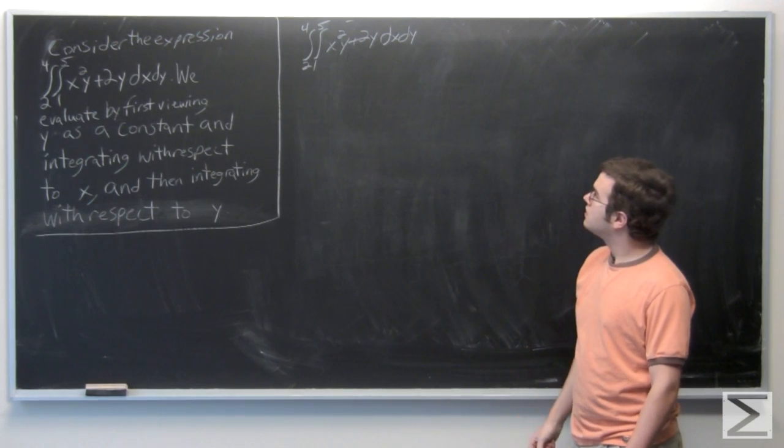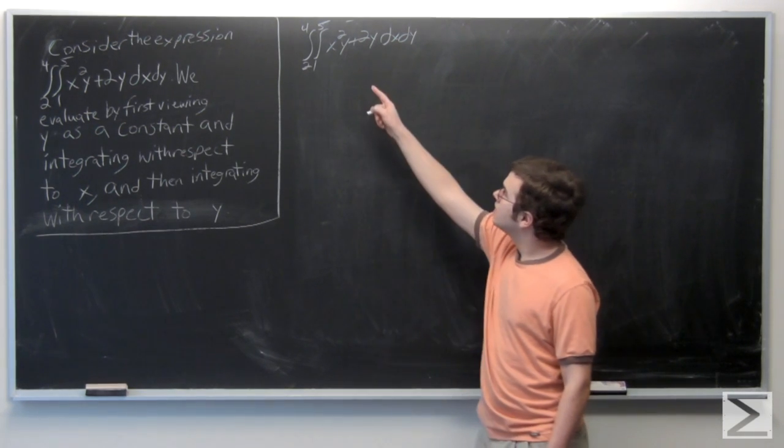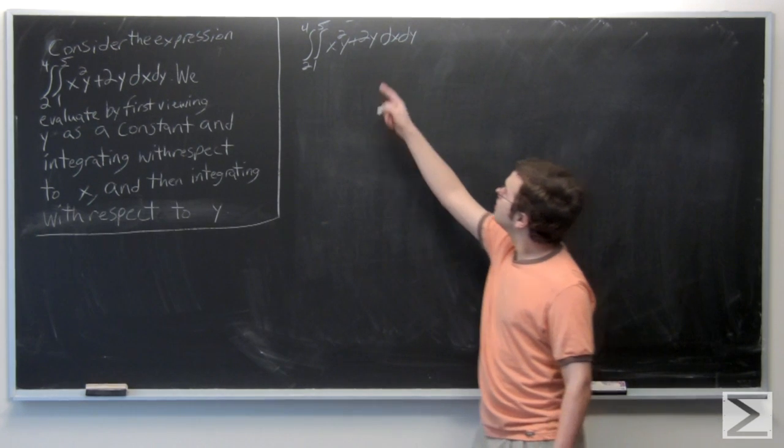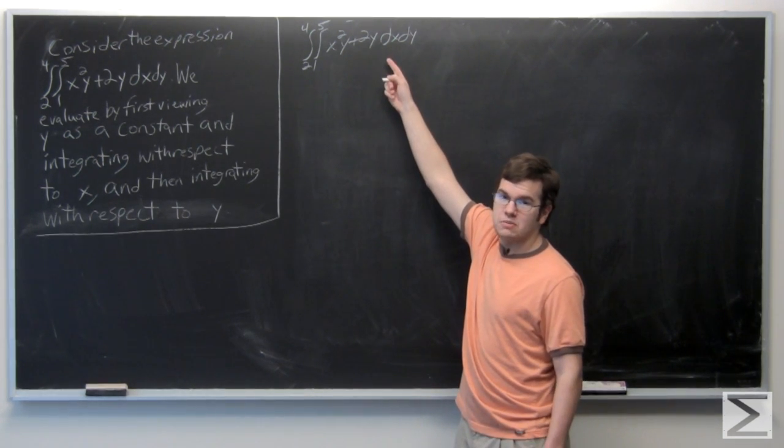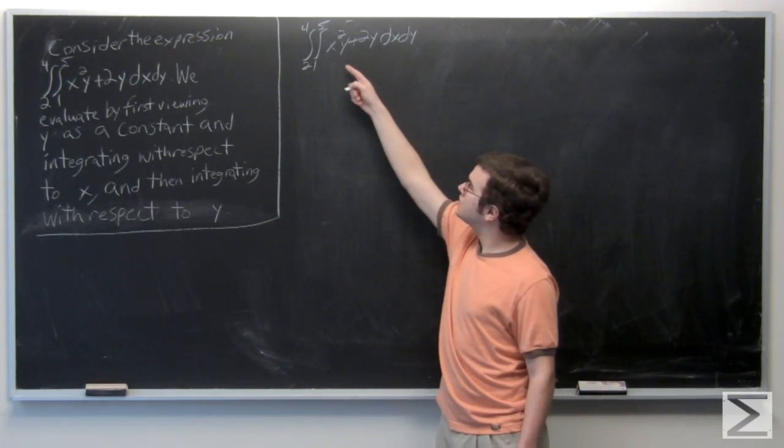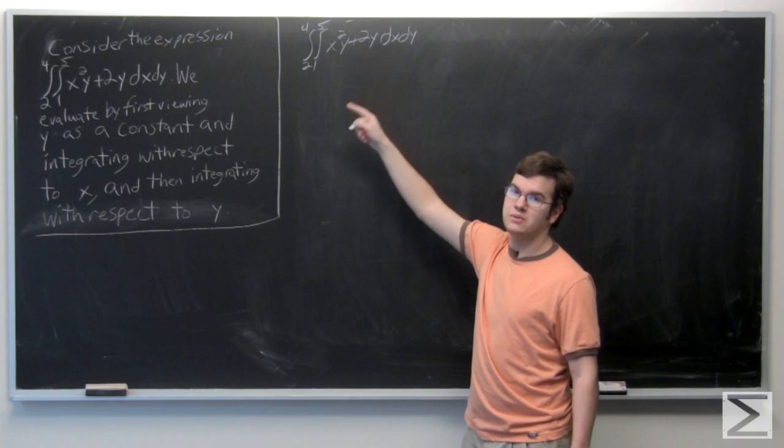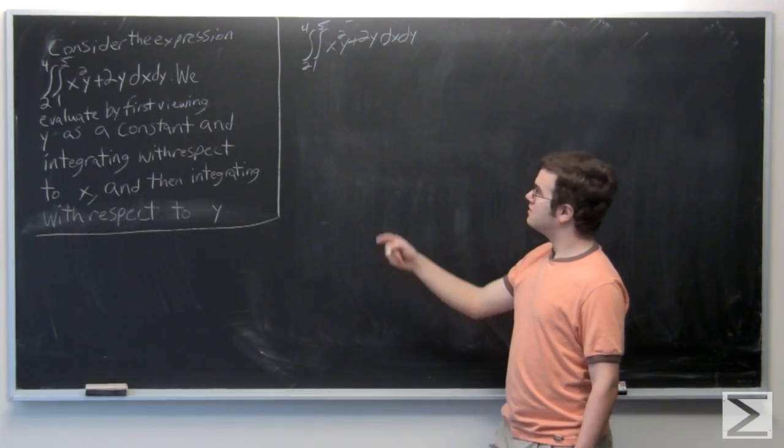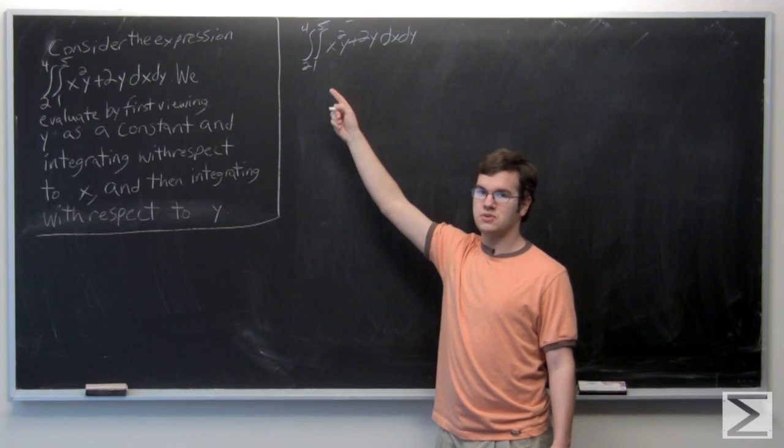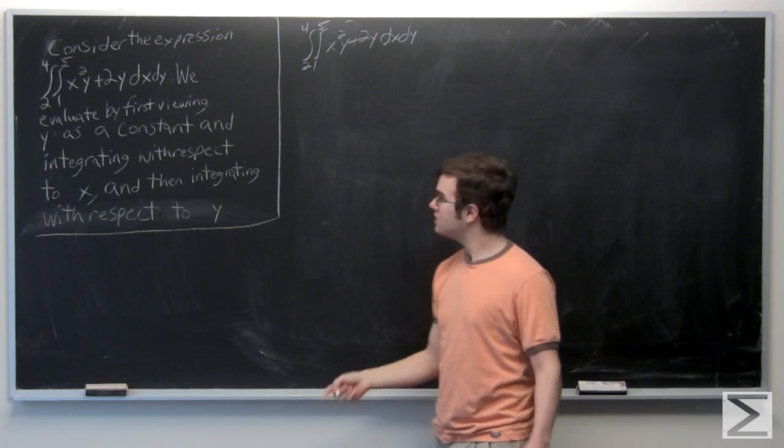Okay, so first here we want to integrate the inner part of this integral. Since dx is in the inner part of the integral, we want to integrate that first. So we will be integrating this expression here, x squared y plus 2y with respect to x. And we will treat y as some sort of constant, such as 1 or 2, it's just a constant like that.